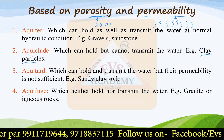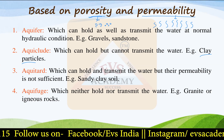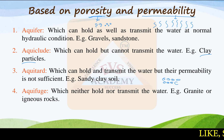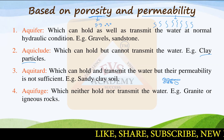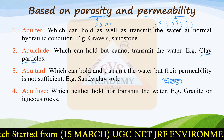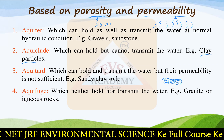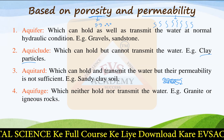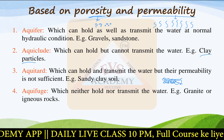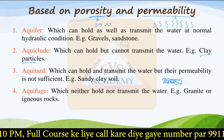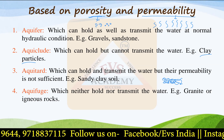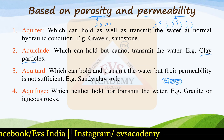Then we have the aquitard, which can hold water and transmit water, but permeability is not very sufficient. This layer is a mixture of sand and clay particles. Sand particles are larger and allow water to permeate through, but clay particles between them restrict easy transmission. Clay provides good water-holding capacity while sand provides permeability, but neither is in sufficient amount. So this type of medium, where both holding capacity and permeability exist but are insufficient, is termed an aquitard.